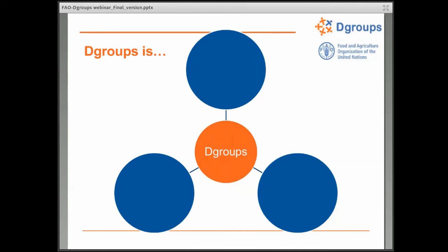When we talk about dGroups, it can be a lot of different things to different people. We tend to talk about it in three ways. Most fundamentally, I think it's a partnership. We see dGroups as a partnership of development organizations who collectively strive for international development and social justice. That's something that is at the basis of all our work.